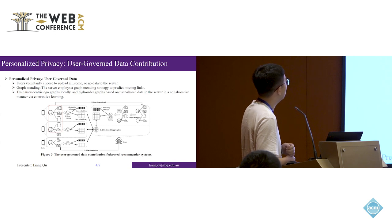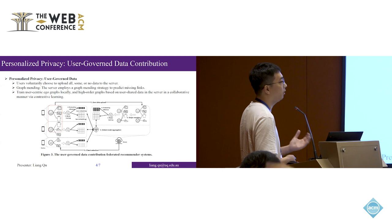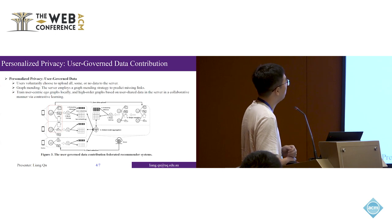However, we propose two techniques to improve the performance. First is the graph mining strategy, because we consider that the number of data from the users is limited. Actually, the graph on the central server is not well connected. We cannot fully use the power of graph neural networks. To address this problem, we propose to use a graph mining technique—an encoder-decoder architecture—to learn the global graph and predict possible missing links to mine this graph. In this way, we can properly use the power of the graph neural network.